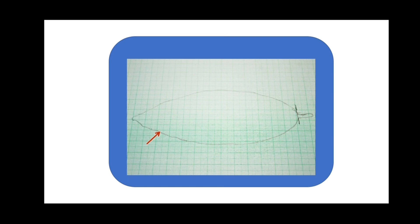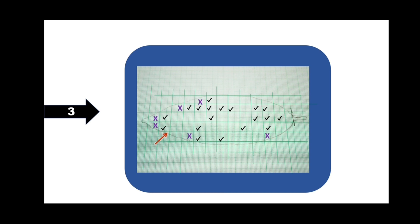Step 3: First, count the number of complete squares within the outline. Then count the number of incomplete squares which are half and more than half. Then ignore the squares which are less than half. I have already marked some squares using a tick mark and some squares using a cross mark. The squares marked with a tick mark are complete squares, and the squares marked with a cross mark are incomplete squares.